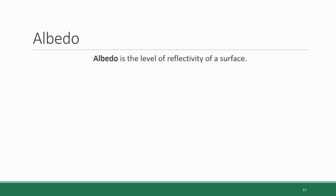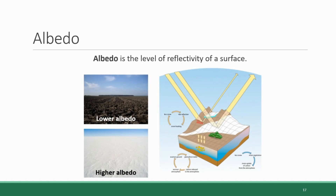Albedo is defined as the level of reflectivity of a surface. So the higher the albedo, the more energy is reflected. Albedo varies based on the characteristics of a surface. For example, dark soil reflects very little solar energy and instead absorbs a lot of it, whereas lighter colored surfaces, especially ice and snow, reflect lots of energy and absorb very little.